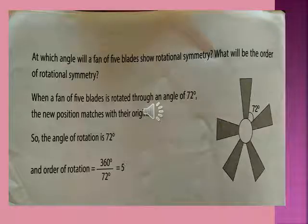At which angle will a fan of 5 blades show rotational symmetry? What will be the order of rotational symmetry? There are 5 blades, so the order is 5. To calculate the angle: 360 ÷ 5 = 72 degrees. And to verify: 360 ÷ 72 = 5. So if you want to calculate the order, divide 360 by the angle. And if you want to calculate the angle, divide 360 by the order.